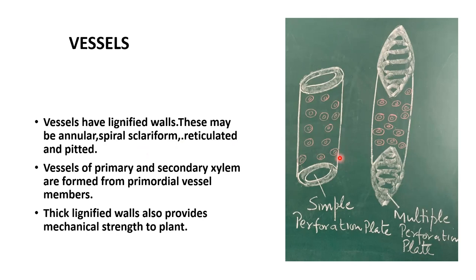In the tallest trees like eucalyptus (an example in angiosperms) and sequoia (an example in gymnosperms), water and minerals move from root to the top with the help of vessels. In angiosperms, 95% of water and mineral conduction occurs through vessels and 5% through tracheids. In gymnosperms it is the opposite — mostly tracheids and fewer vessels.